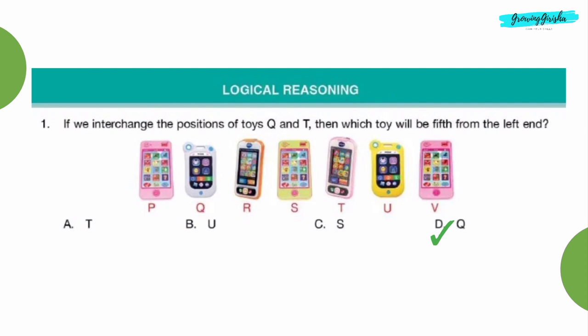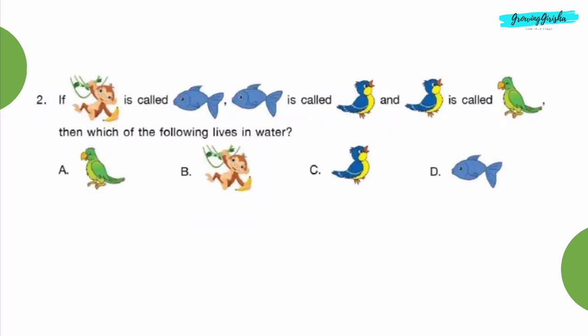Question 2: If monkey is called fish, fish is called bird, and bird is called parrot, then which of the following lives in water? Option C, bird.